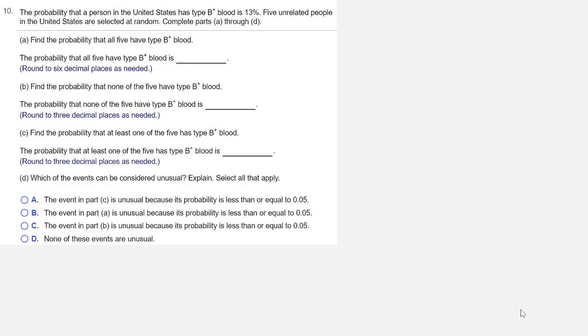Part A: Find the probability that all five have type B positive blood. Part B: Find the probability that none of the five have type B positive blood. Part C: Find the probability that at least one of the five has type B positive blood. And part D: Which of the events can be considered unusual? Explain. Select all that apply.